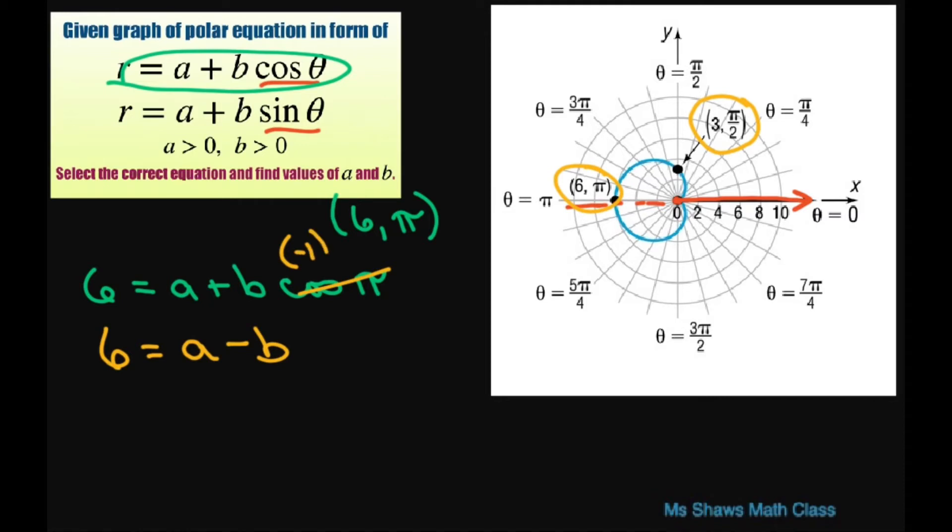Alright. Now, the second point we have is this one. So we do the same thing. We're going to write 3 equals A plus B cosine of pi divided by 2. Cosine of pi divided by 2 is going to be 0. So this 0 is out and you get A equals 3.